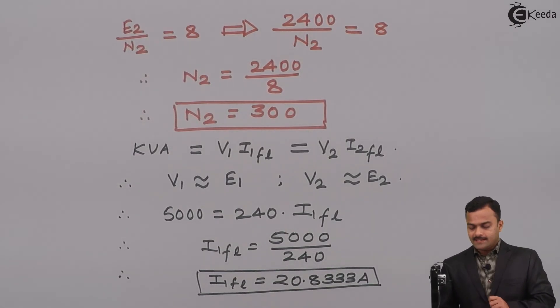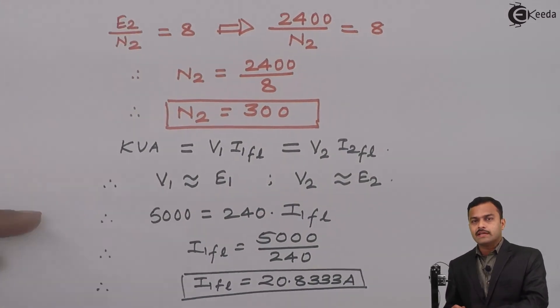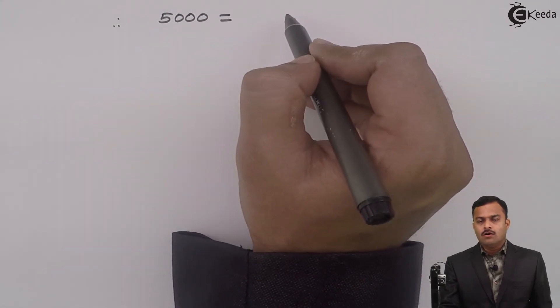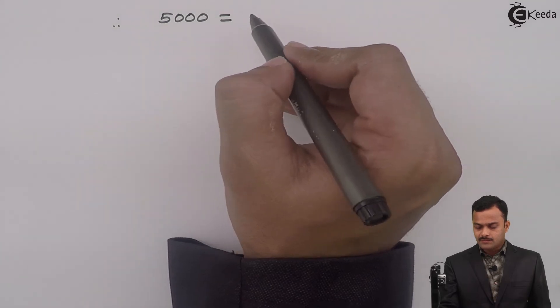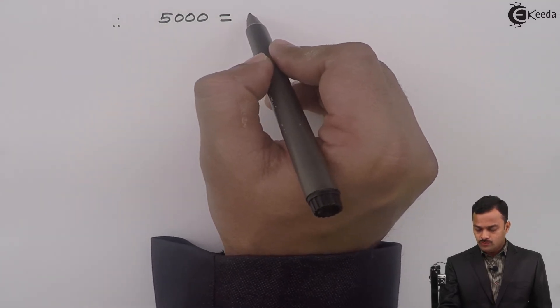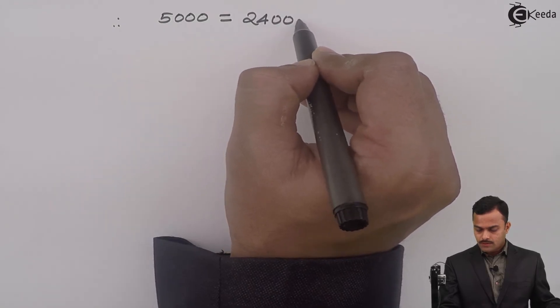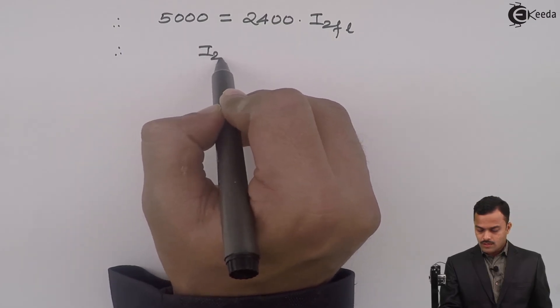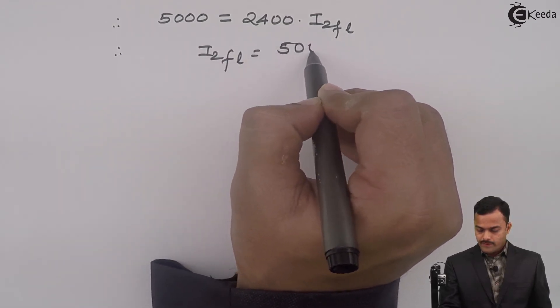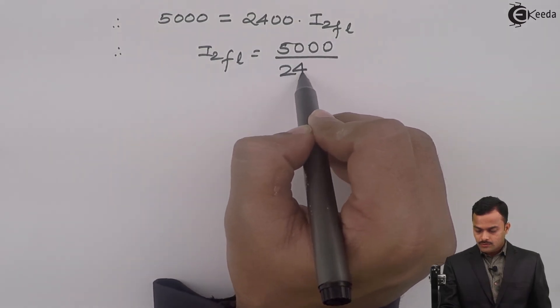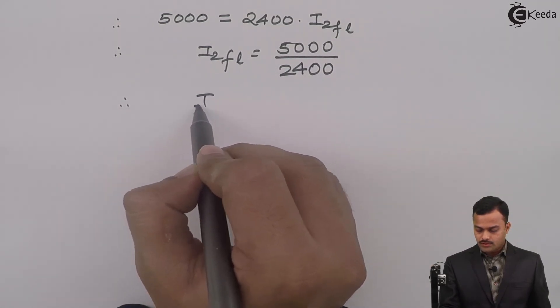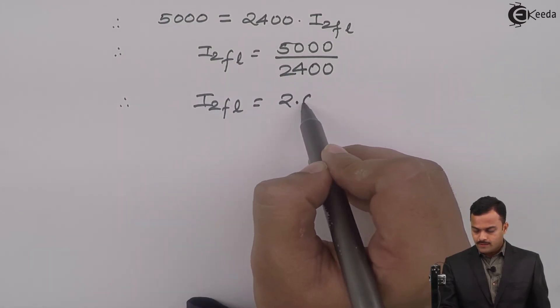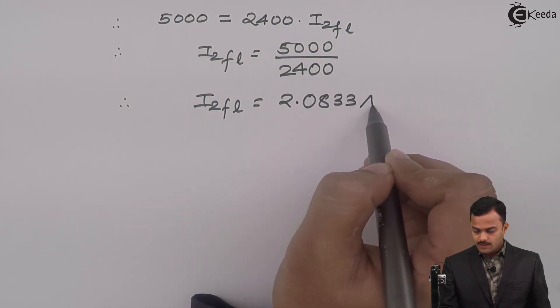Similarly, I can get I2 FL. So, for I2 FL I will use E2. 5 kVA or you can say 5000 VA equal to E2 that is 2400 multiplied by I2 FL. So, I2 FL equal to 5000 divided by 2400. Solution will be I2 FL which is 2.0833 ampere.